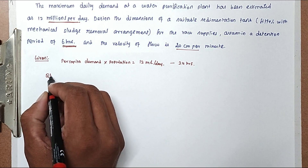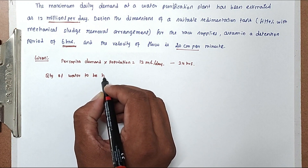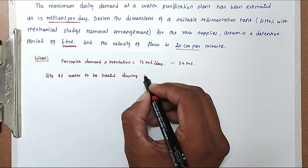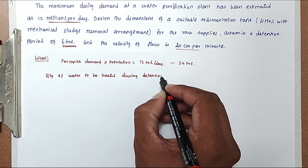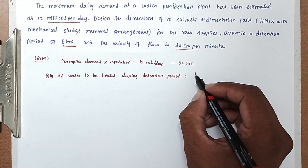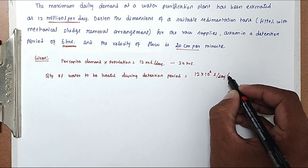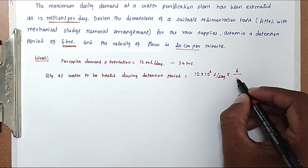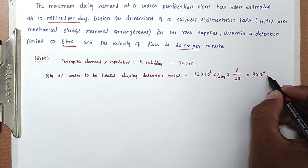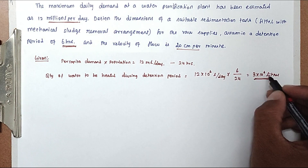So now the quantity of water to be treated during the detention period: only 6 hours. So now 12 × 10⁶ liters per day × 6 hours divided by 24 hours. Solving this we get the value of 3 × 10⁶ liters. So the quantity of water treated is 3 × 10⁶ liters.